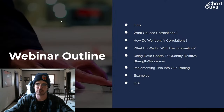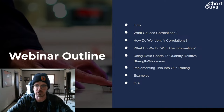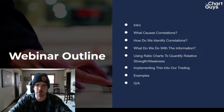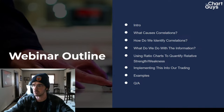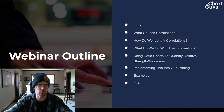So we've got our webinar outline here. We're going to do a little intro, a brief reflection on the previous three, then get right into the correlation stuff — what causes correlations, how do we identify them, what do we do with this information. We're going to talk about using ratio charts to quantify relative strength and weakness, how to implement this into our trading, go through a bunch of examples, and then wrap it up with some Q&A.